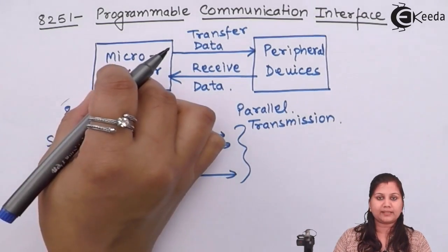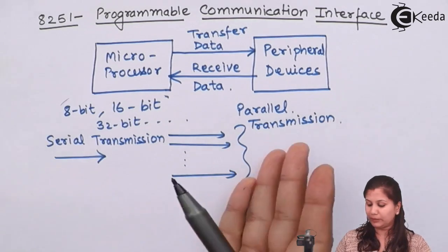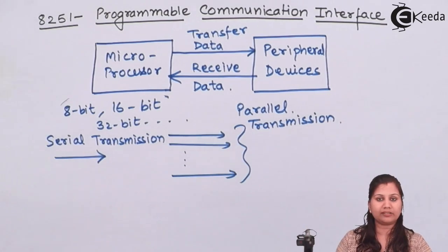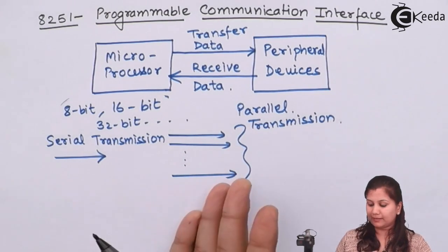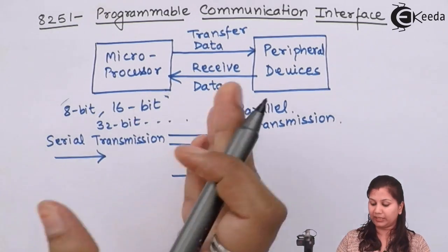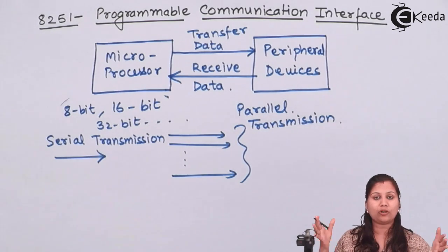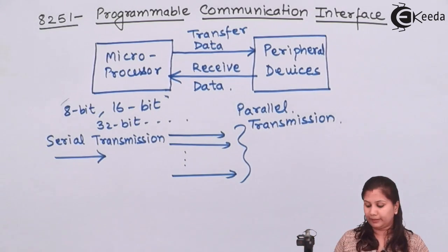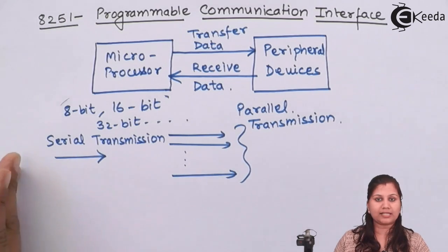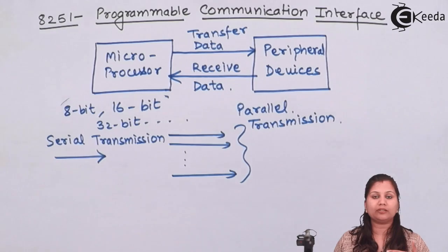When the microprocessor is transmitting data over a long distance, it will prefer serial transmission, because parallel transmission requires many lines to be connected between the microprocessor and the peripheral device, and there is a long distance between these two. So serial transmission is preferred when data is to be transmitted over a long distance.